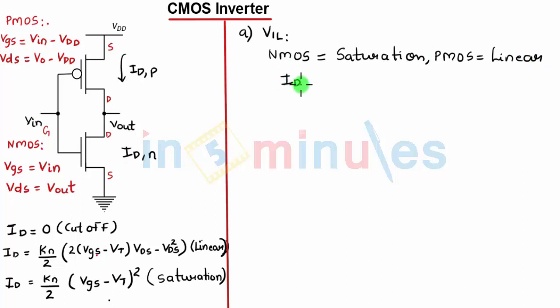Let's equate the value of the current flowing through the NMOS with the current flowing through the PMOS. NMOS is in saturation, so KN by 2, VGS N for NMOS minus VT, the whole square. Let's write the equation of current for PMOS in linear region: KP by 2, twice VGS for PMOS minus VT for P, this into VDS for PMOS minus VDS square.